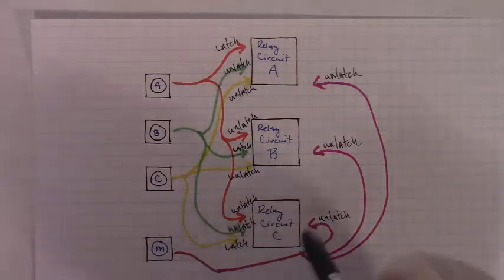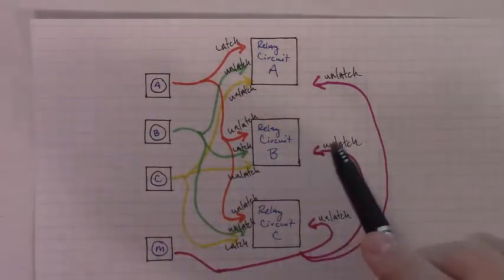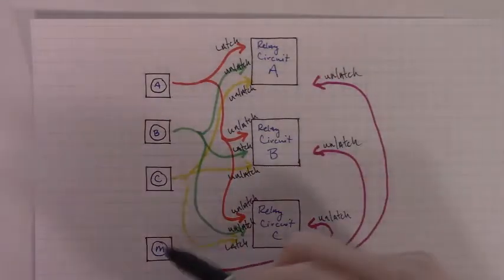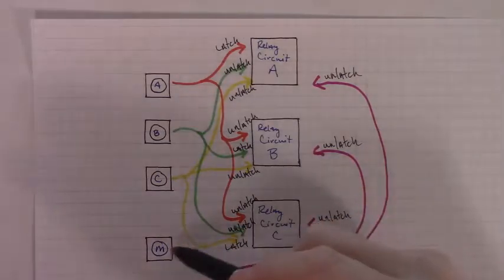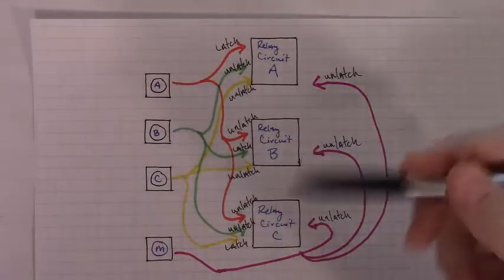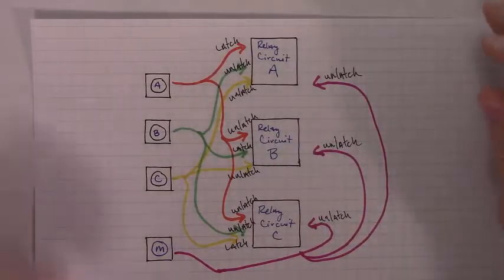And if we push master reset, we want all of them to unlatch. Whether they're on or not, just unlatch. But generally, the idea is one of the circuits would be on, so we push the master reset. Given that the button has no way of knowing which is on, we just unlatch them all and end up turning off the one that happened to be on. That's the overall idea.